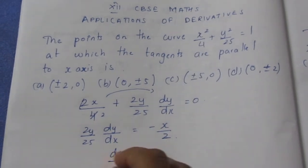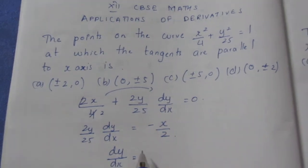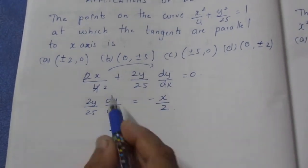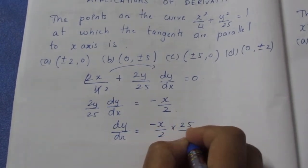Now dy/dx is equal to - this comes as a reciprocal because this is in multiply. So -x / 2 × 25 / 2y.